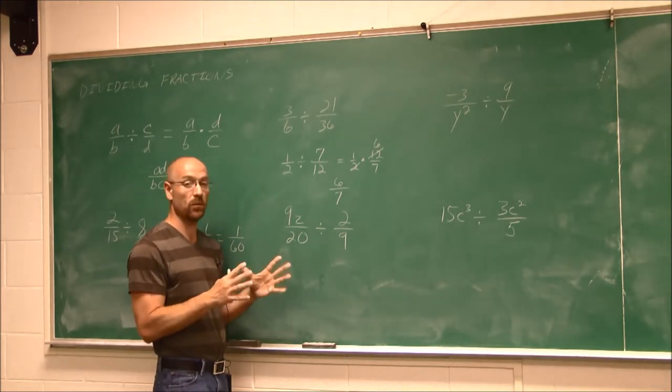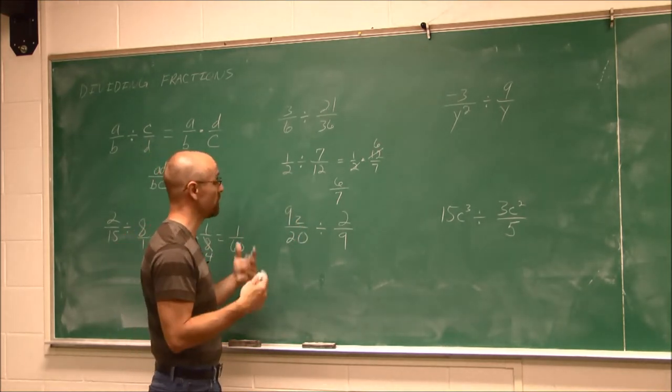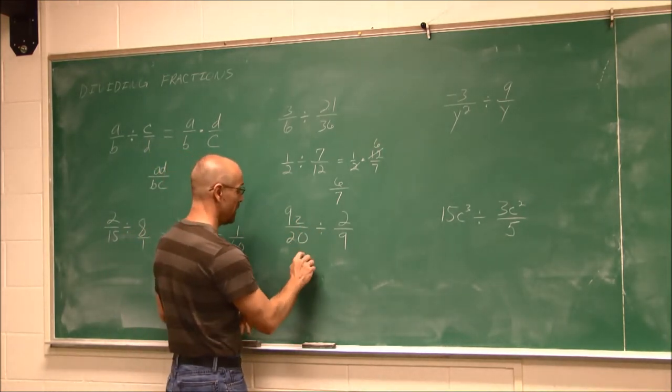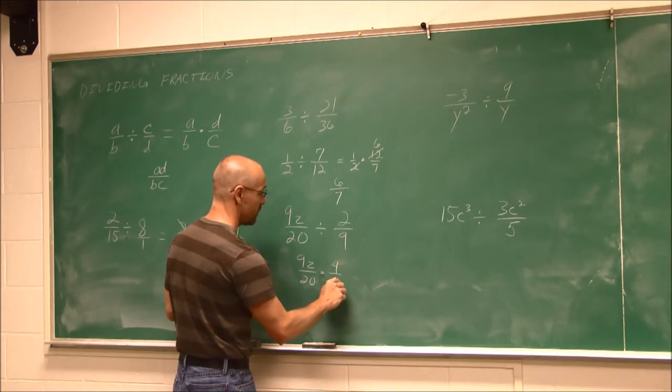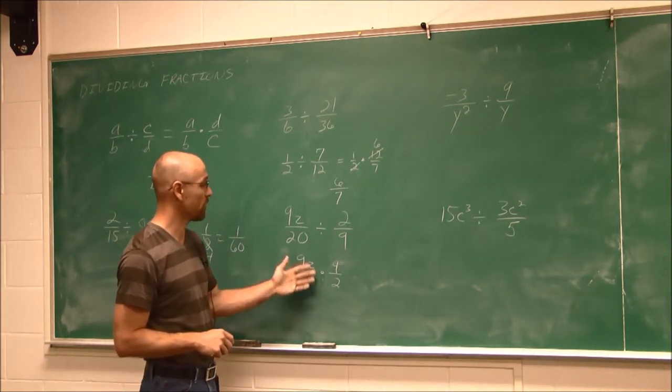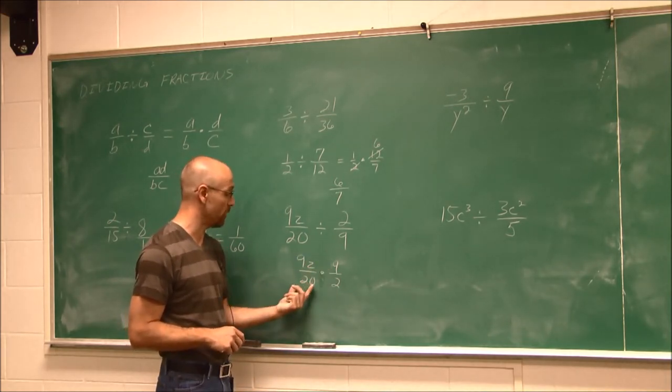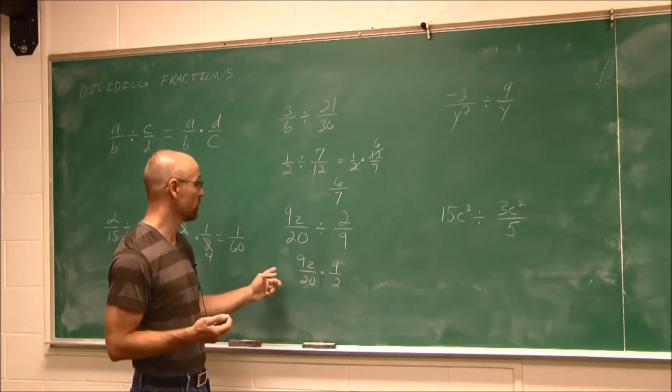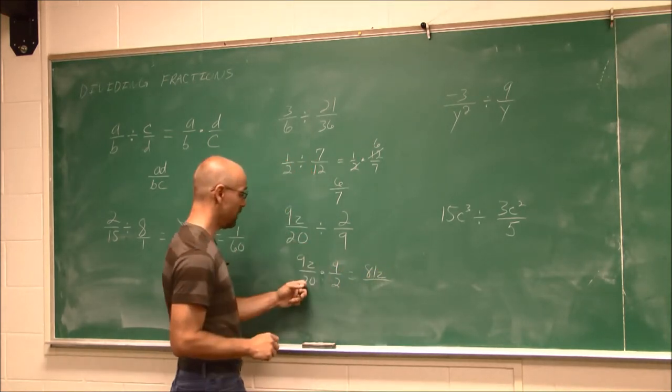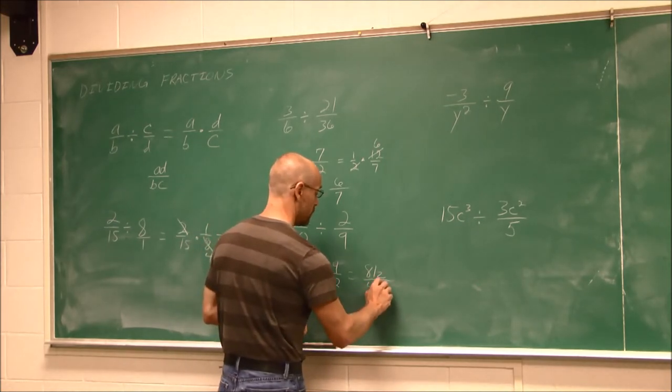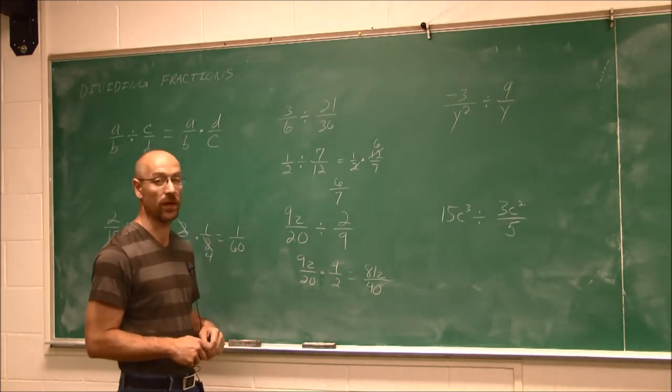What if it has a variable? Well, a variable we can treat just like a number. We have 9z/20 divided by 2/9. I'm going to multiply by the reciprocal: 2/9 becomes 9/2. We would try to do some reducing. If I look at this, 9 doesn't have any common factors with 2 or 20. So there's nothing to reduce. I can multiply straight across: 9z times 9 is 81z, and 20 times 2 is 40. That is simplified as far as we can go: 81z/40.